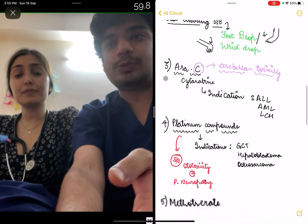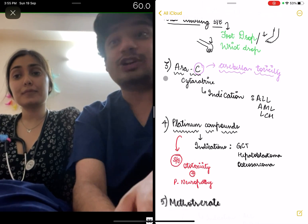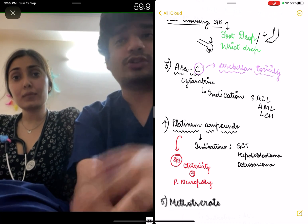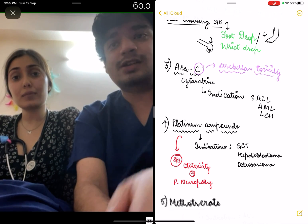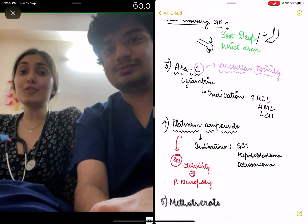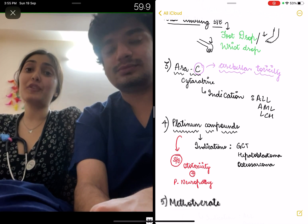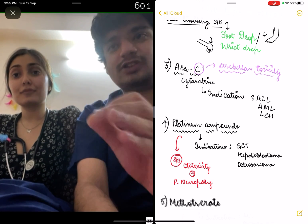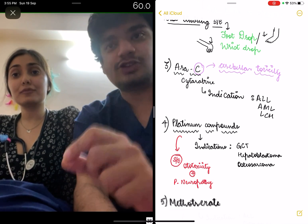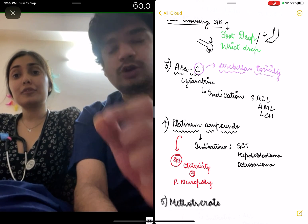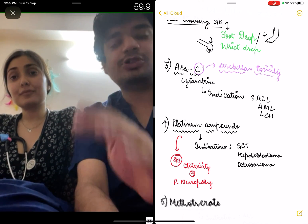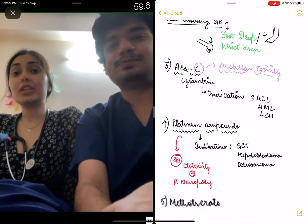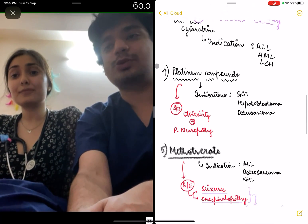Next are the platinum compounds — cisplatin, carboplatin, and taxanes. They are used for germ cell tumors and all solid tumors including hepatoblastoma and osteosarcoma. The side effects are ototoxicity as well as peripheral neuropathy. Also remember they are nephrotoxic — just like aminoglycosides, they are both ototoxic and nephrotoxic. The reason is that they inhibit a special calcium channel present both in the inner hair cells and in the renal tubular cells.